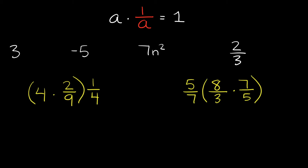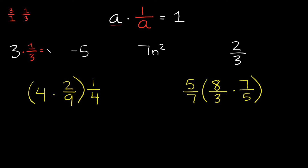The inverse property of multiplication says when you have a number and you multiply it by the reciprocal, your answer is always 1. For example, here we have the number 3. You can write it as the fraction 3 over 1, and the reciprocal is simply flipping the fraction, so the reciprocal of 3 is 1 over 3. If you multiply these together, your answer is equal to 1.